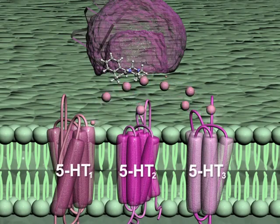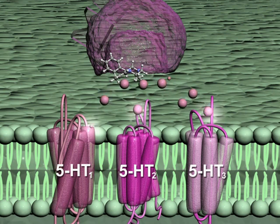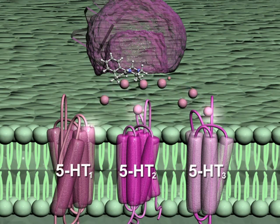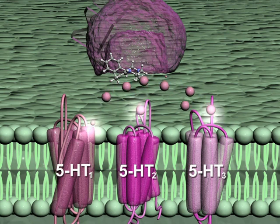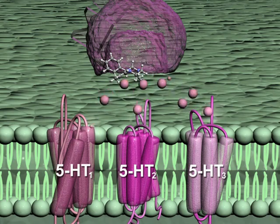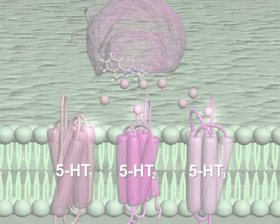Selective serotonin reuptake inhibitors (SSRIs) increase the concentration of serotonin by blocking serotonin reuptake. They demonstrate 5-HT1A, 5-HT2, and 5-HT3 agonism and do not directly affect the NA system.